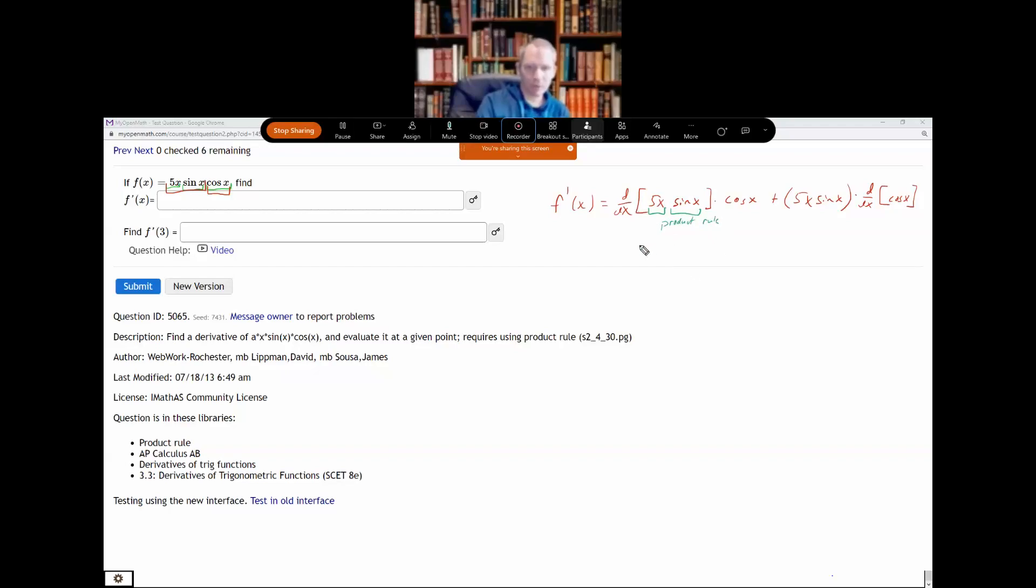So the derivative of this thing, I'm going to use the product rule, so I have the derivative of the first times the second plus the first times the derivative of the second. Which is 5 times sine x plus 5x times cosine x.